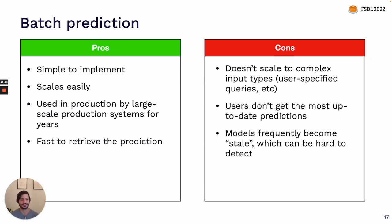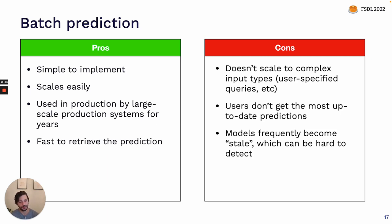Batch prediction is a tried and true pattern you can run and be pretty confident it'll work well. It's also relatively low latency because the database is designed for the end application to interact with, so latency was a concern the database designers were able to solve for us. There are also some pronounced cons: the most important one is that it just doesn't work for every type of model. If the universe of inputs is too large to enumerate every single time you need to update your predictions, it isn't going to work.